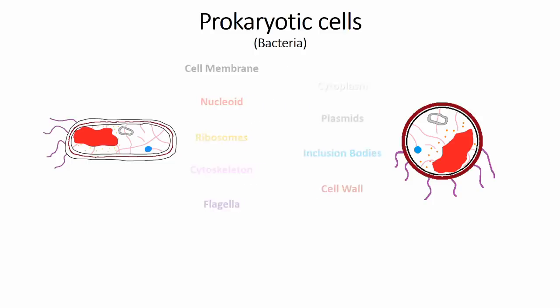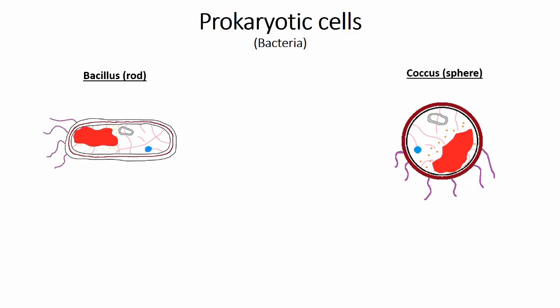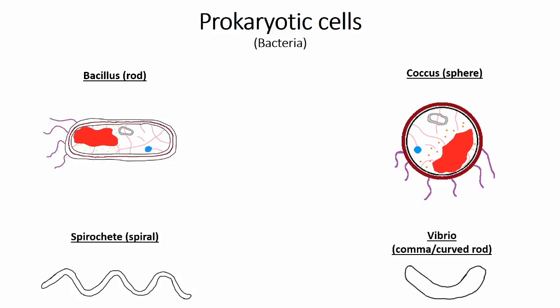Bacteria can come in four main shapes, or morphologies: the rod-shaped bacillus, shown on the left; the spherical coccus form, shown on the right; the spiral-shaped spirochete; and a comma or curved rod-shaped vibrio form.